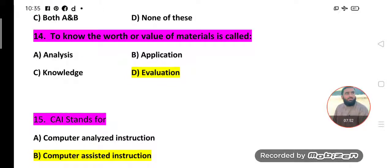MCQs number 14. To know the worth or value of materials is called what? When you judge materials, judge the worth of teaching material - the materials from which you take content for teaching - first you evaluate their worth, you judge their value. So this process is called evaluation.